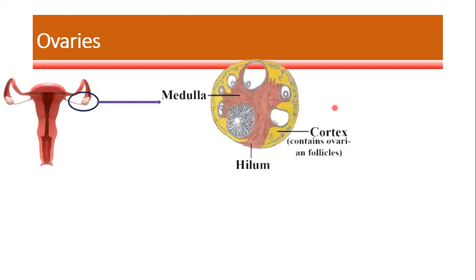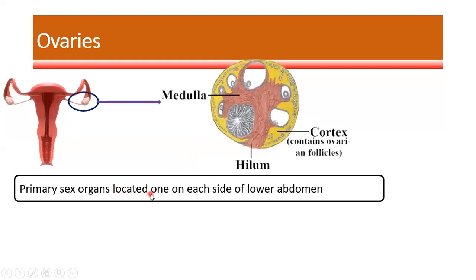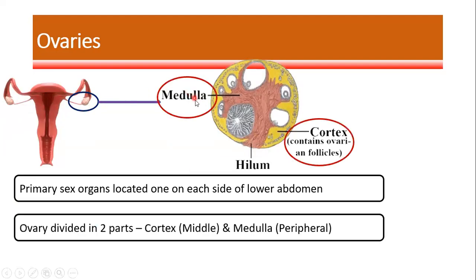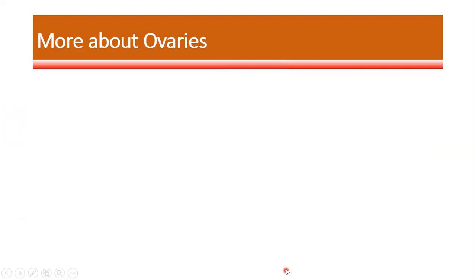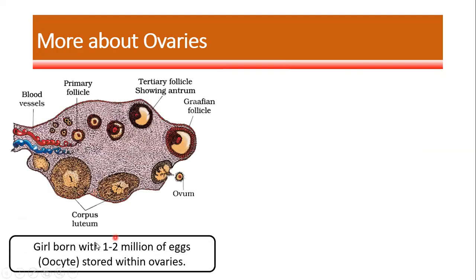The last part of the female reproductive system is the ovaries, which are generally considered the primary sexual organ for the female. There are two ovaries located on each side of the lower abdomen. The ovary is divided into two parts: the cortex and the medulla. Each ovary is around two to four centimeters long and is shaped like an unshelled almond.